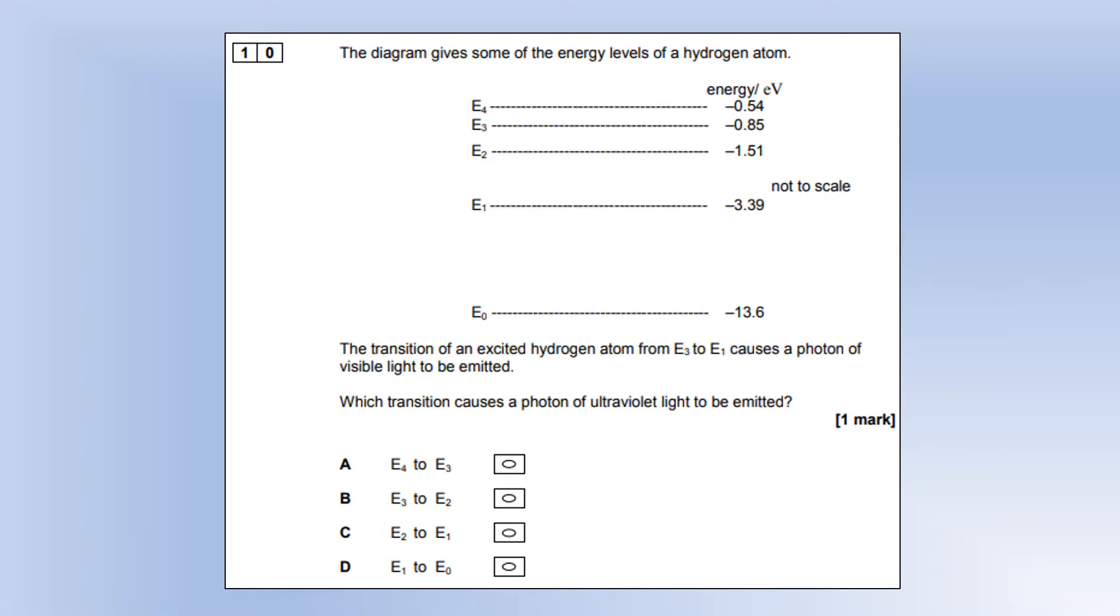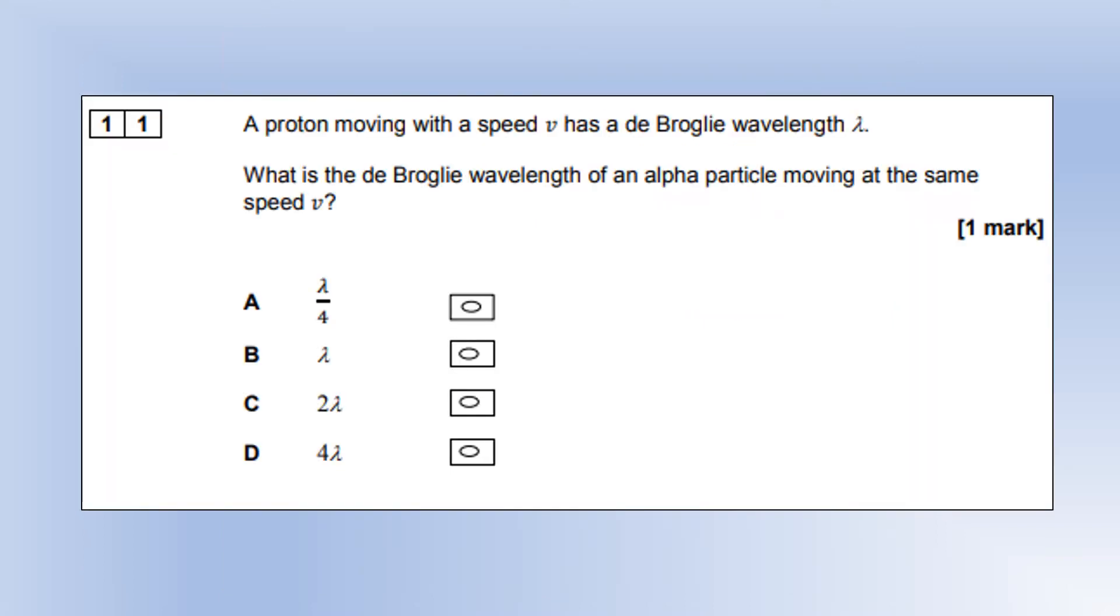The diagram gives some energy levels of a hydrogen atom. The transition from E3 to E1 is visible light. Which transition would cause ultraviolet light? We're looking for a bigger energy transition, because ultraviolet has higher photon energy than visible. E4 to E3 is really small. E3 to E2 is clearly smaller than E3 to E1. Likewise, E2 to E1 is smaller than E3 to E1. So we know it must be E1 to E0, which does indeed look bigger.